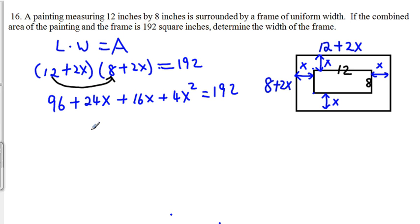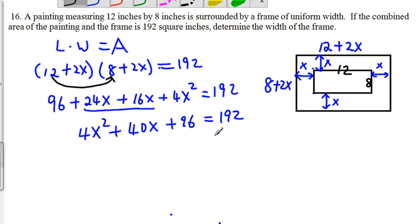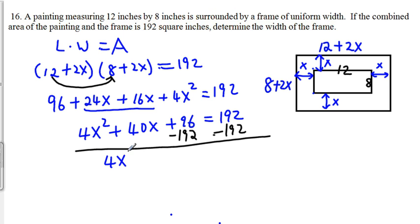Now we try to reorganize the left-hand side, and at the same time, combine like terms. So we get 4x squared, plus 40x, plus 96, equal to 192. Now we can subtract 192 on both sides. Once we do that, we get 4x squared, plus 40x, minus 96, equal to 0.